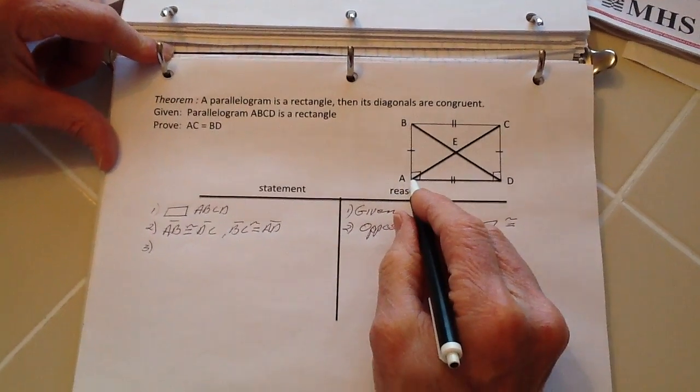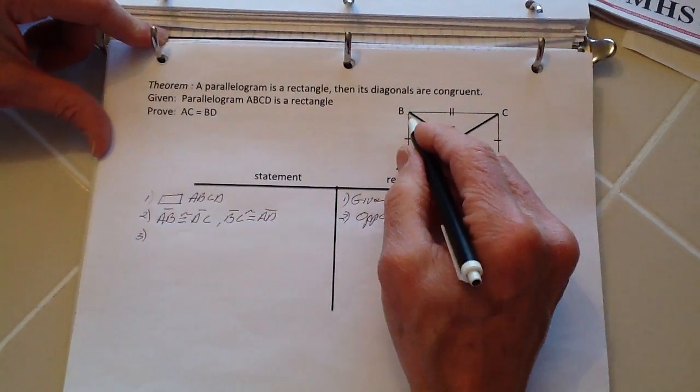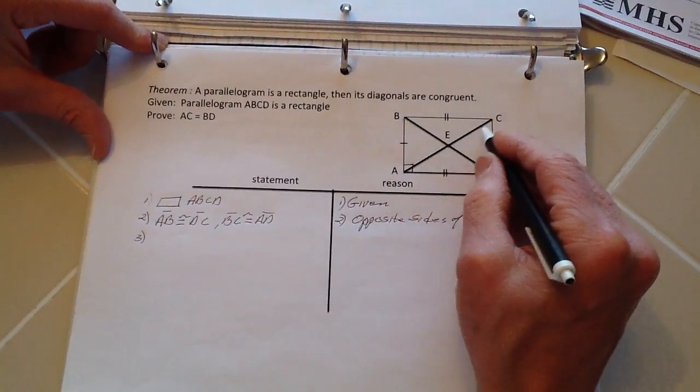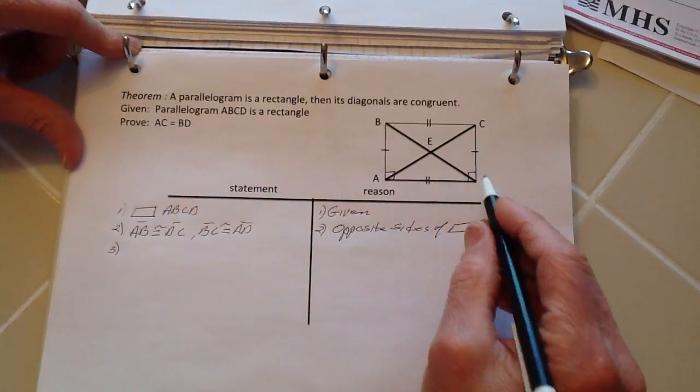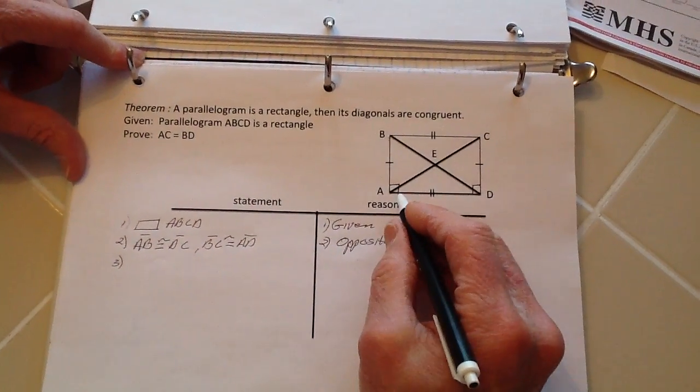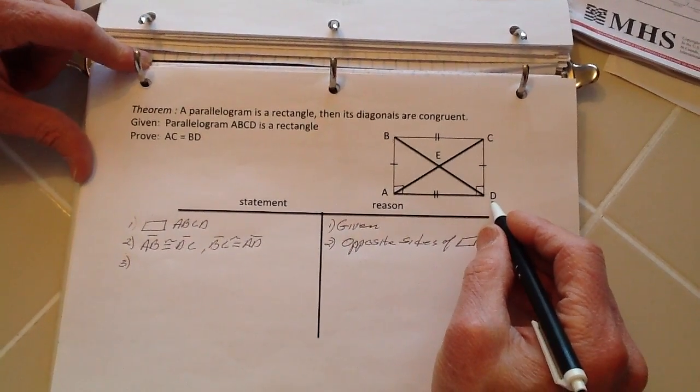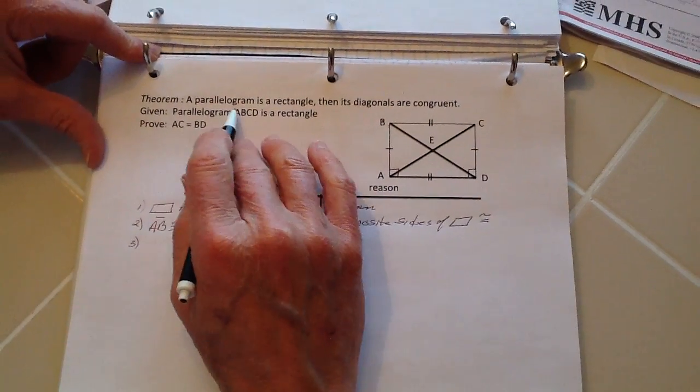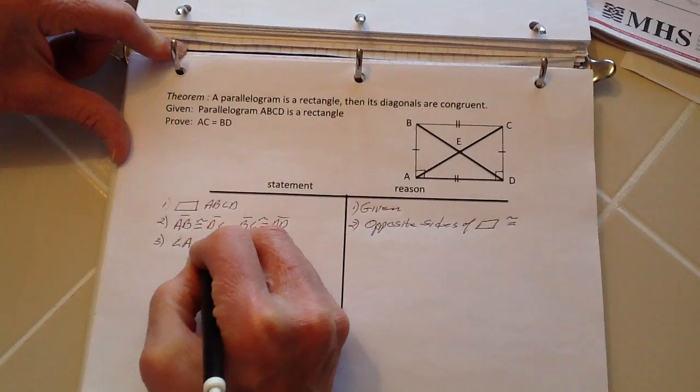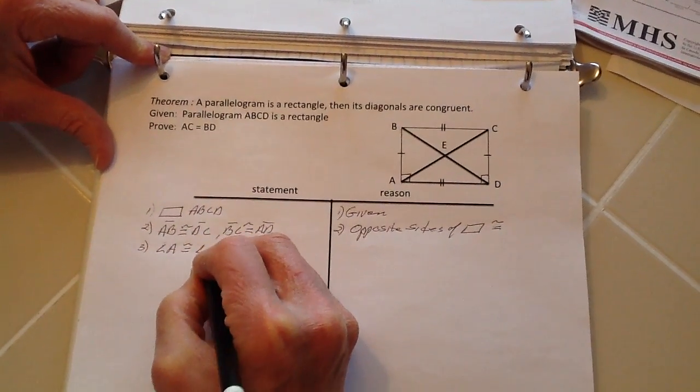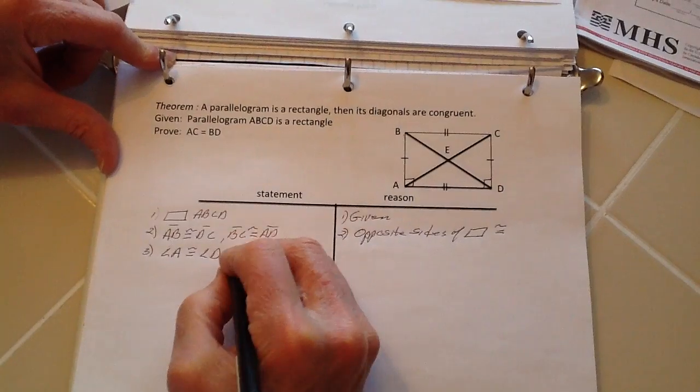Because I'm going to draw a triangle here and a triangle here, so I know that these two angles are congruent to each other because they both equal 90 degrees, which means that, because this is a rectangle.